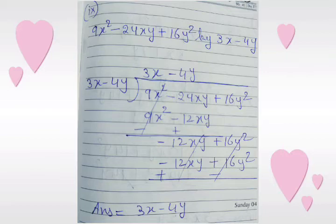We copy down the third term, that is plus 16y squared. We multiply 3x minus 4y with minus 4y and get minus 12xy plus 16y squared. After changing the sign, both terms are cancelled, and the answer is 3x minus 4y.